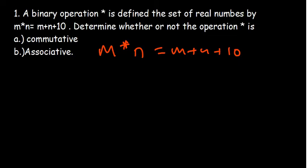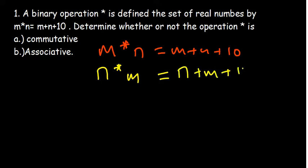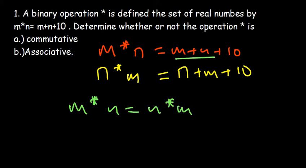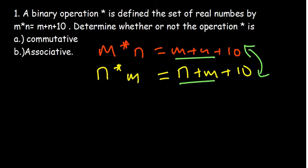The question says determine whether or not the operation is commutative. Commutative means the order doesn't matter. So if we have m★n, what if we start with n★m — do we get the same result? Swapping m and n gives us n plus m plus 10. Since m plus n and n plus m are the same, these two expressions are equal, which proves the binary operation is commutative.